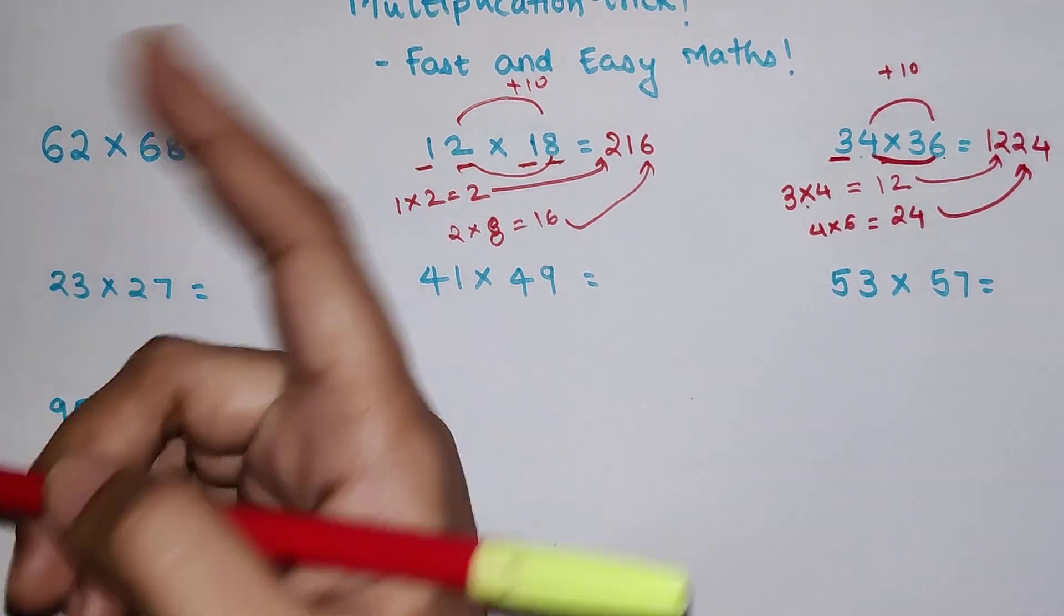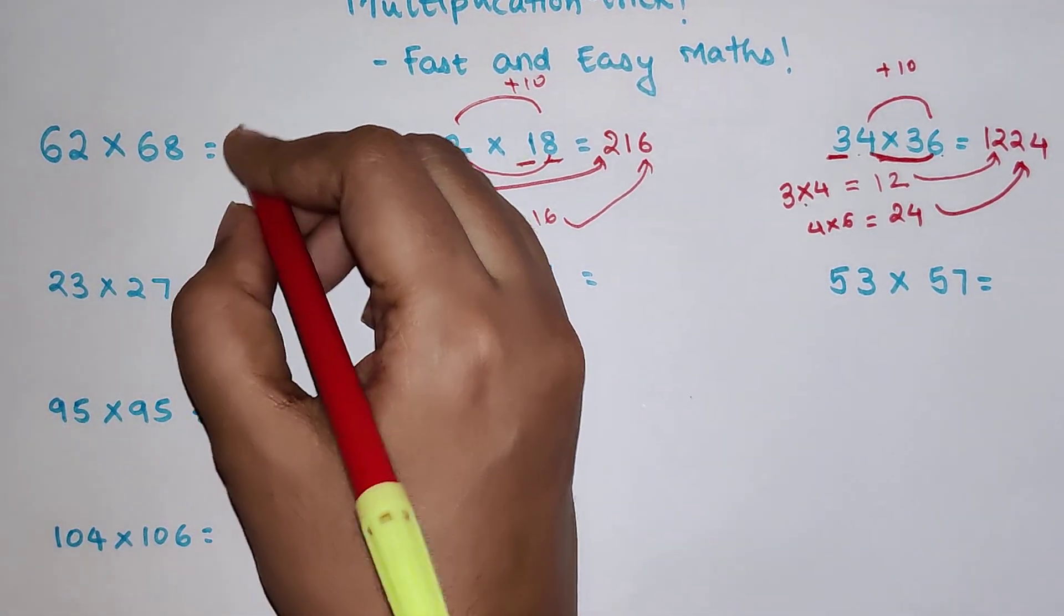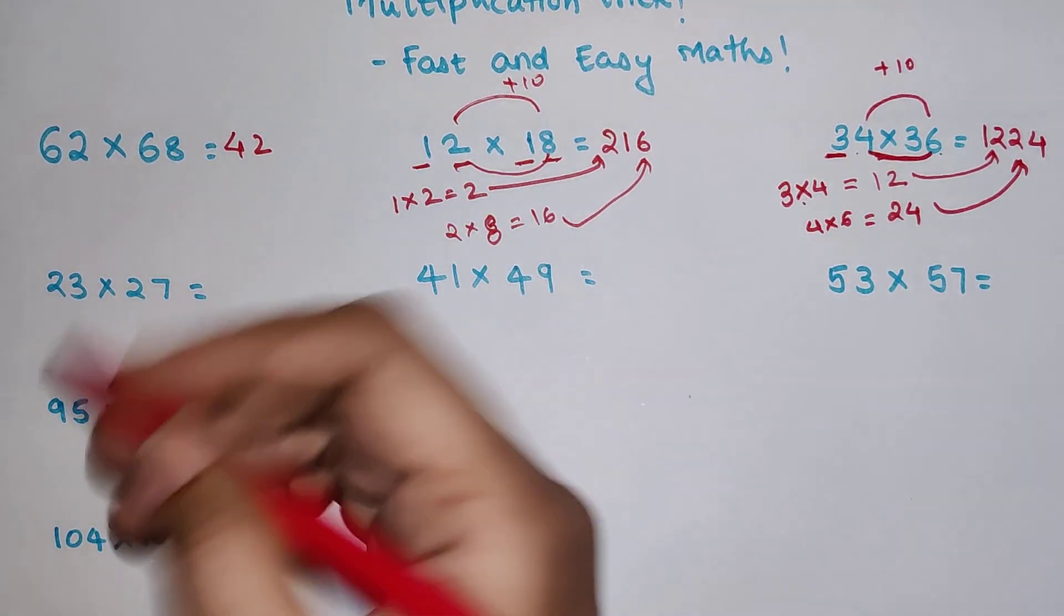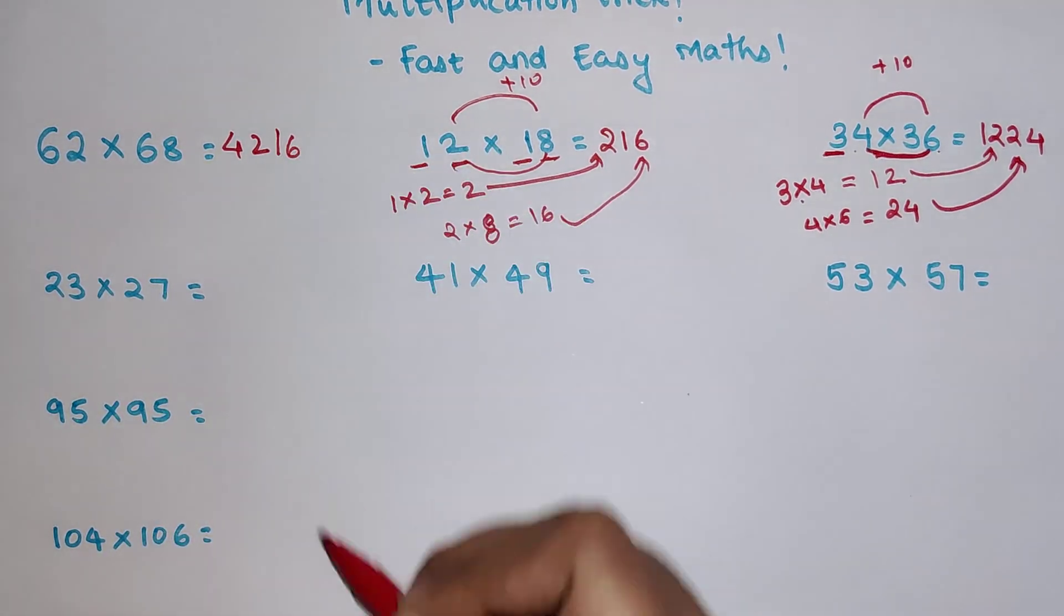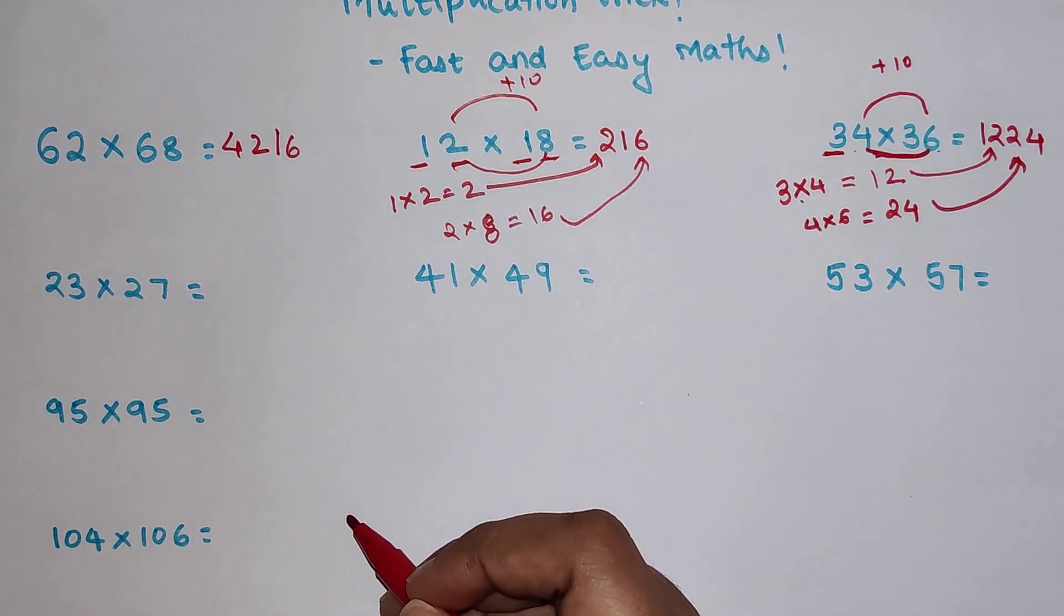So this one. So first part would be what, 6 into 7 that gets you 42. And the second part would be what, 2 into 8 gets you 16. So your answer is 4216.